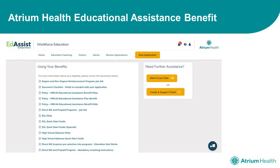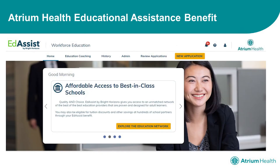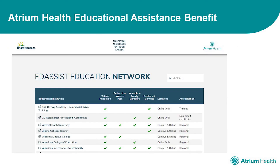If you need further assistance, the Bright Horizons support team is available either by live chat or through creating a support ticket to help you with any issues that you might have. Back on the home page, you can also access best-in-class schools through the Education Network provided by Bright Horizons. Our educational assistance vendor, Bright Horizons, has compiled a list of schools that offer discounts available to you as an Atrium Health teammate. By clicking on this list, you'll be able to see what schools have discounts available to you.